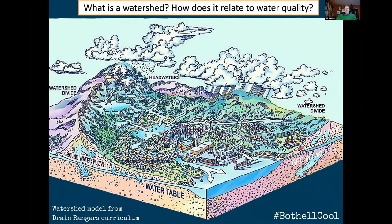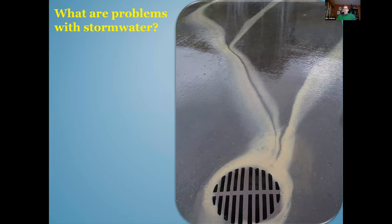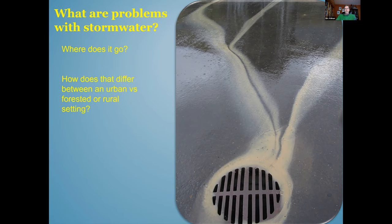A watershed is an area of land that drains to a common point, typically a stream, lake, or larger body of water. One of the main issues in watersheds is stormwater, which most people are unaware goes into storm drains and then into streams. In an urban setting, you have much faster runoff and far less groundwater recharge than in a rural setting.